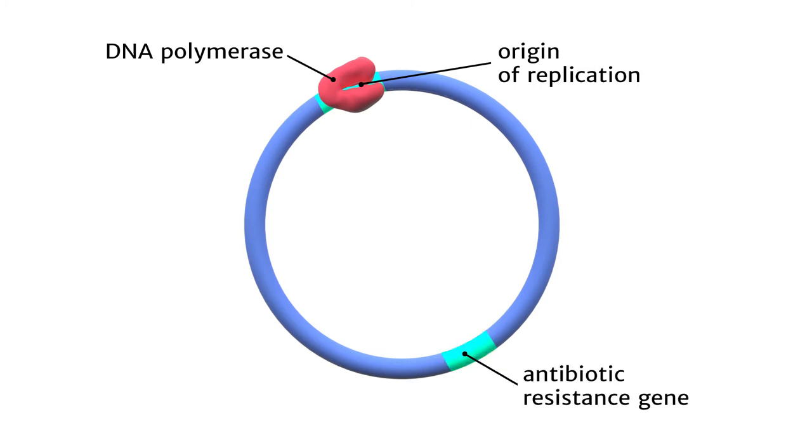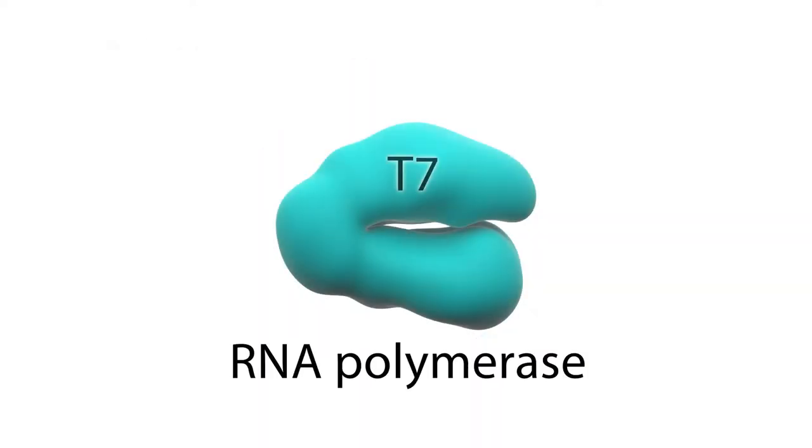An antibiotic resistance gene is used to select for cells that contain the plasmid. Other antibiotic-free selectable markers also can be used but are less common. One of the most widely used expression systems relies on an RNA polymerase from the T7 bacteriophage.